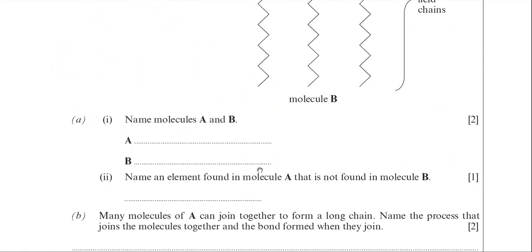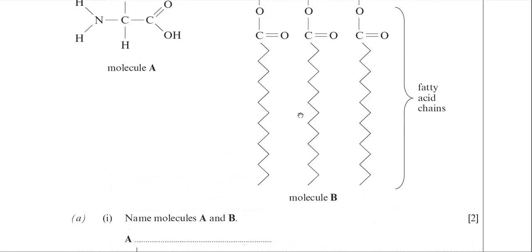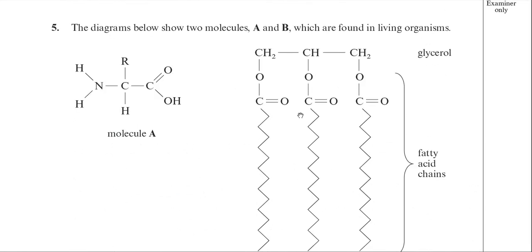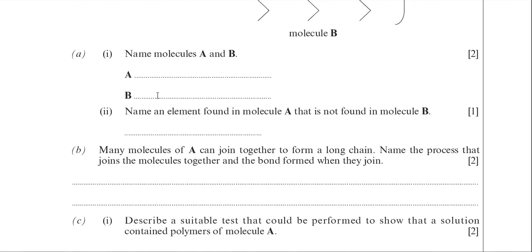Here we go then, name molecules A and B, so A is an amino acid, and B, now what do we call it? Is it a lipid? Is it a fat? Is it a triglyceride? Now in the mark scheme, the examiner is not allowing lipid. And I'd be honest with you, I don't know why he wouldn't accept a lipid there.